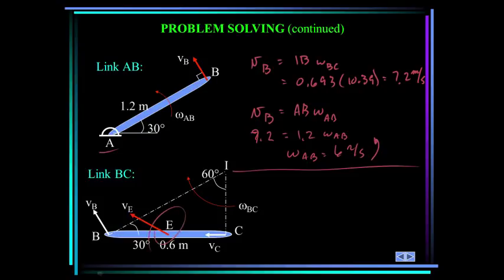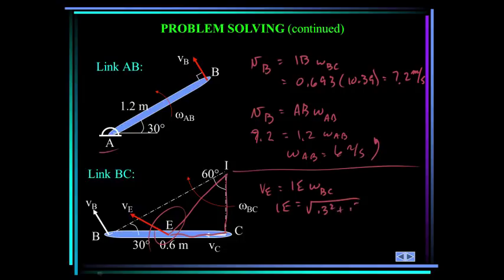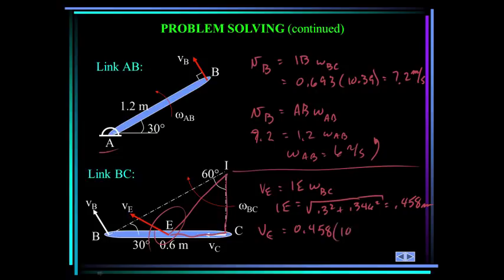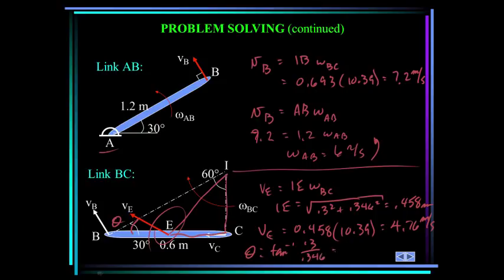To find the velocity at E: v_E equals r_{IE} times omega_BC. The distance IE is found from the triangle as the square root of 0.3² + 0.346², which equals 0.458 meters. So the velocity at E equals 0.458 times 10.39, which is 4.76 meters per second. The direction theta of the velocity of E is the inverse tangent of 0.3 over 0.346, which is 40.9 degrees.